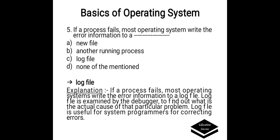If a process fails, most operating systems write the error information to: Option A. New file, B. Another running process, C. Log file, D. None of the above. Correct answer is C, Log file. If a process fails, the operating system writes the error information to a log file. The log file is examined by the debugger to find the actual cause of the problem. Log files are useful for system programmers for correcting errors.